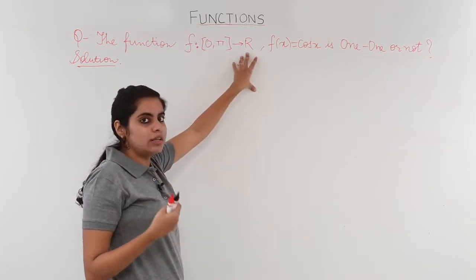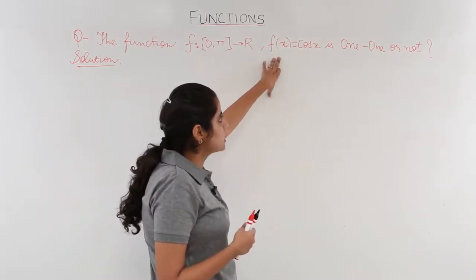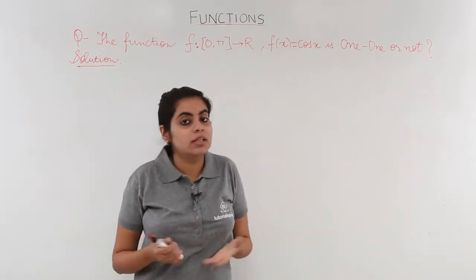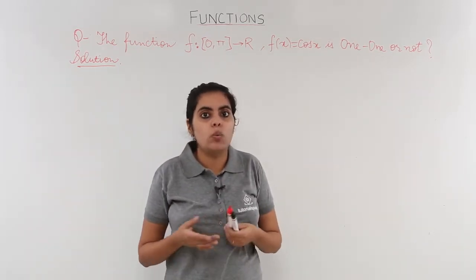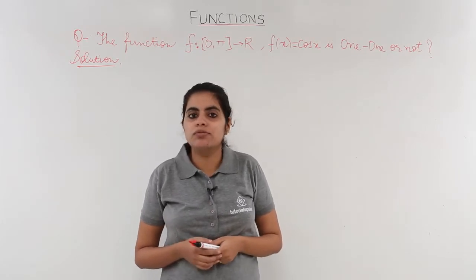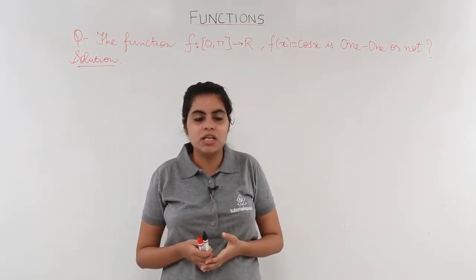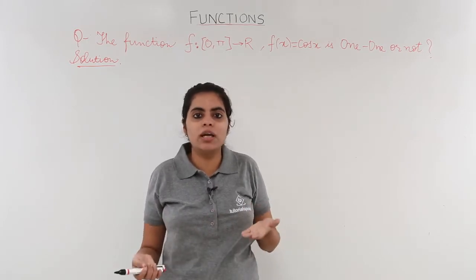The codomain is all real numbers. The function is cos x. You are to find out whether it is one-to-one or not. The same question comes to mind: which method to apply? The first was graphical method, and we all know the graph of cos x, so what would be better than drawing a simple graph?